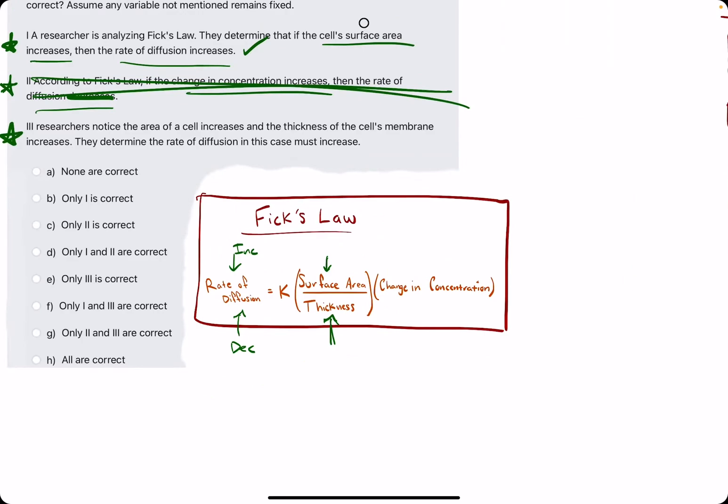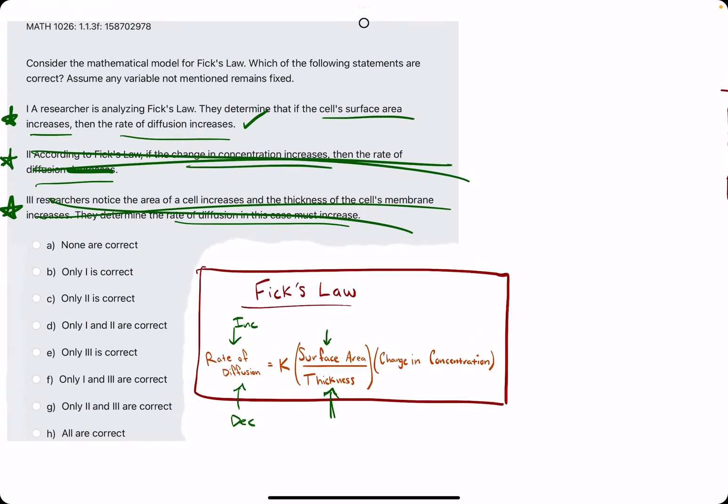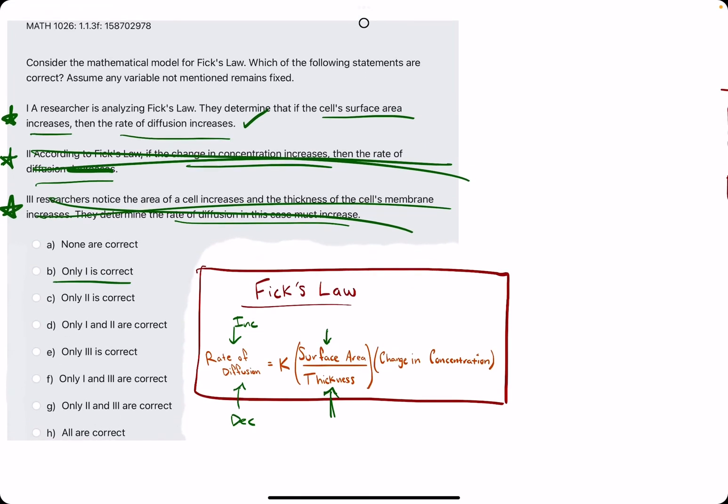So unless we know by how much the surface area and thickness are increasing, then we can't tell exactly what's going to happen to the rate of diffusion. So we can't claim that rate of diffusion must increase. That just doesn't make sense. So I think only one is correct.